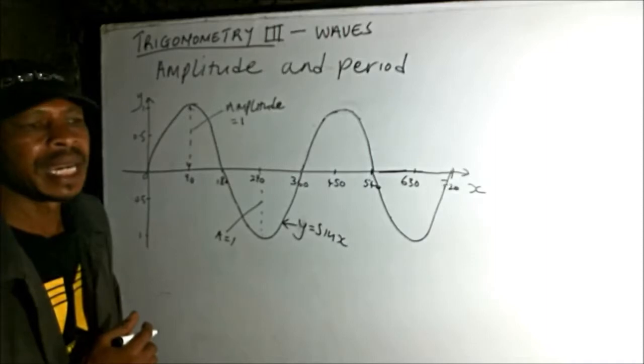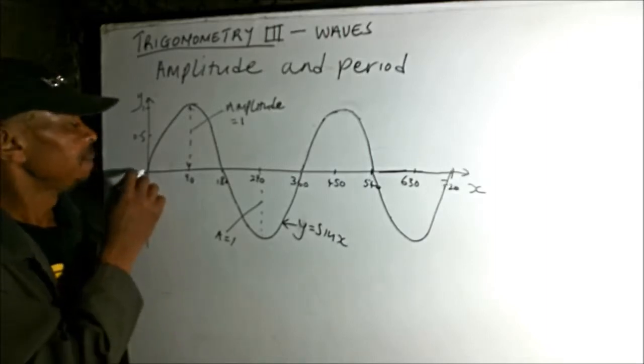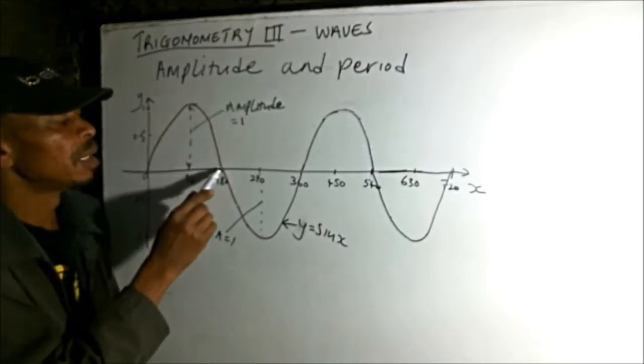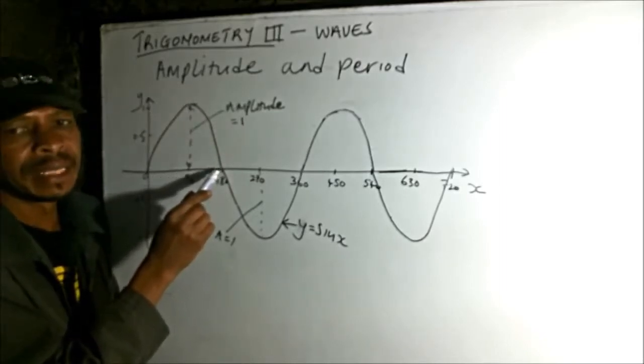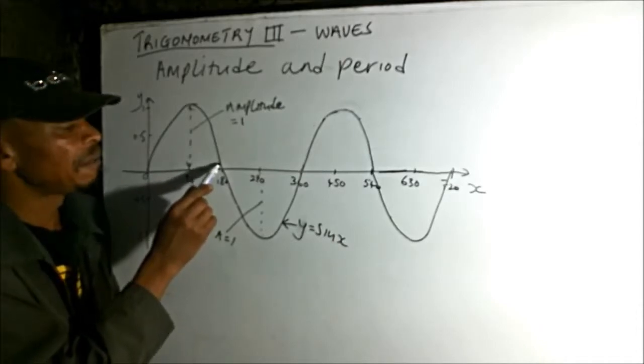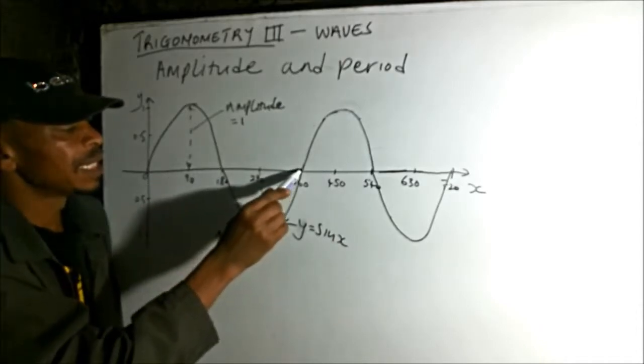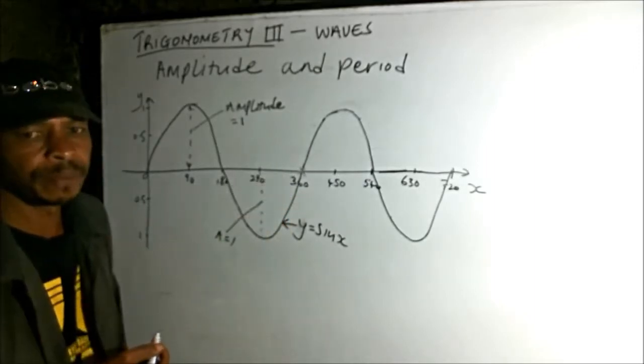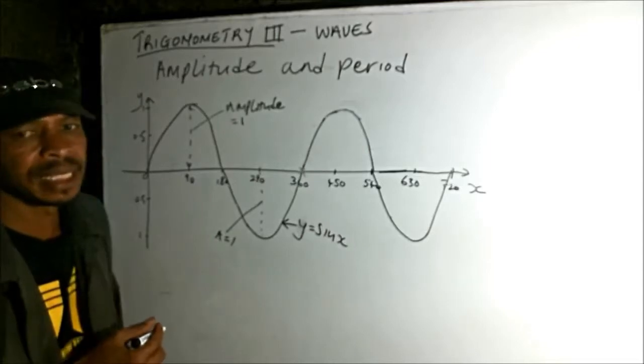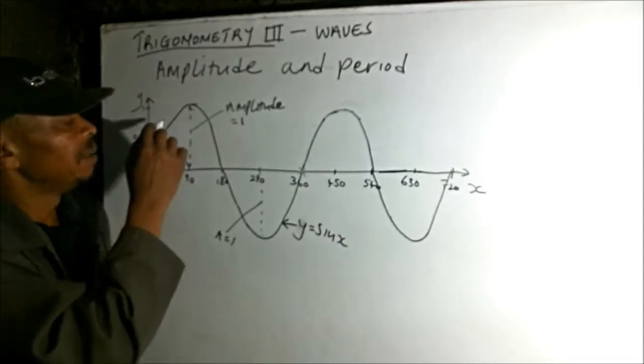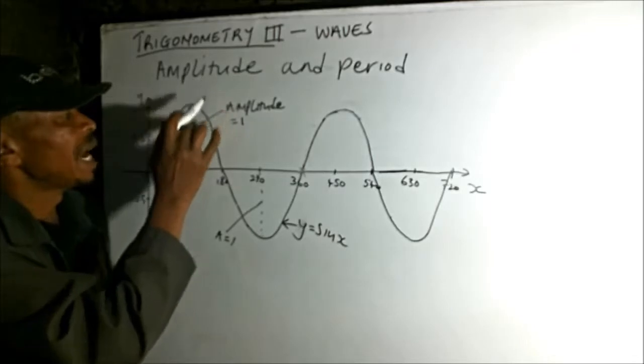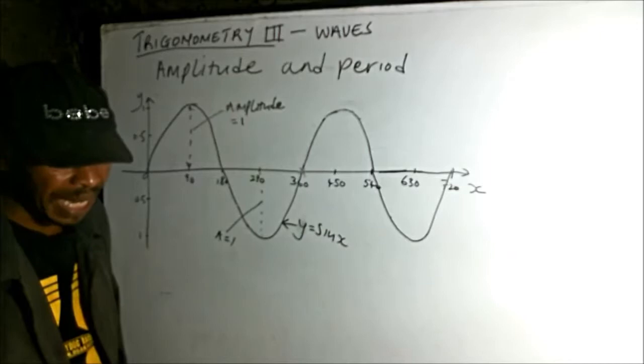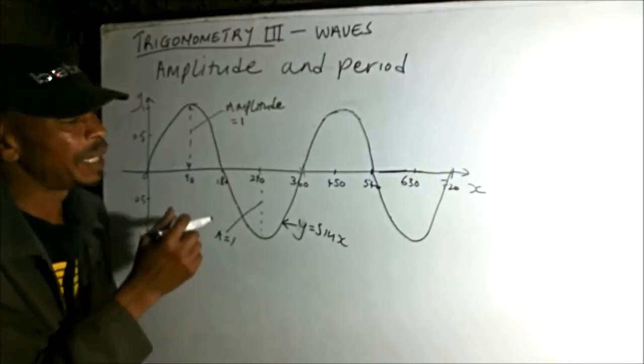Then we come to period. You can see my wave starting from zero, it goes up to 180, then again from 180 to 360. At 360, we are back to zero on the y-axis, and we have made a complete turn.